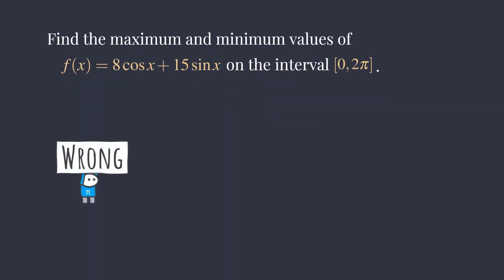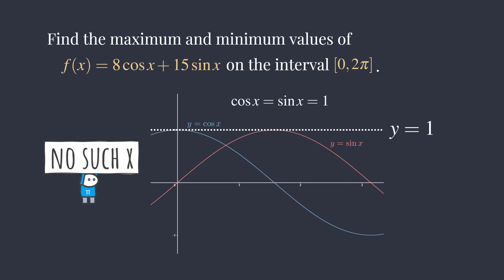It is not as simple as just saying that the maximum is 23 by adding 8 and 15, even though the max for cosine and sine are both 1. That is because there is no x for which cosine x and sine x both equal 1 at the same time.